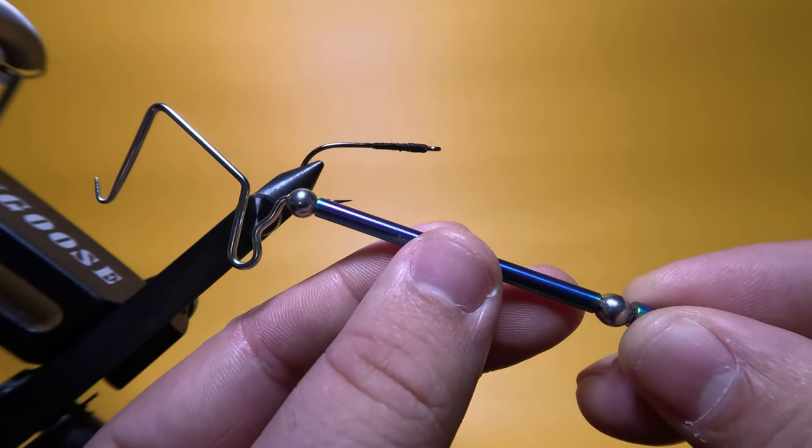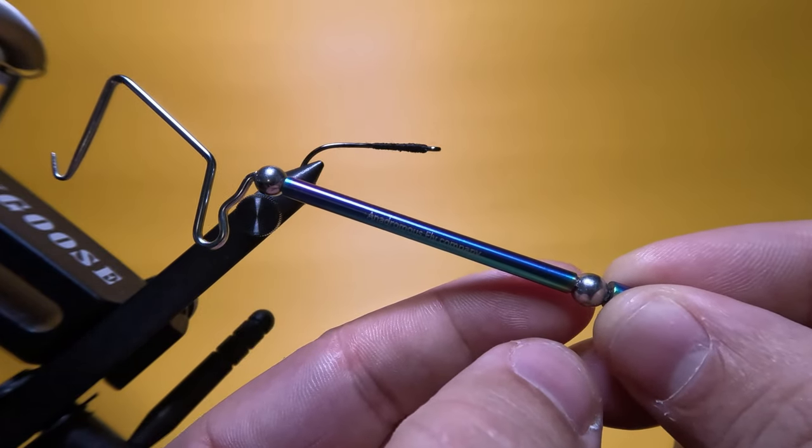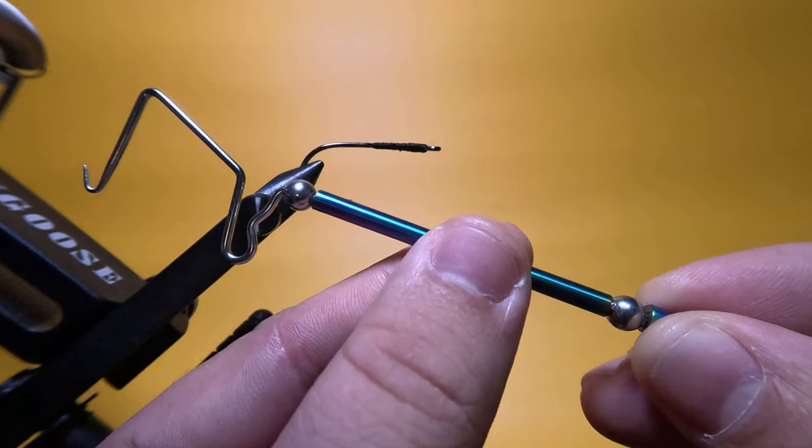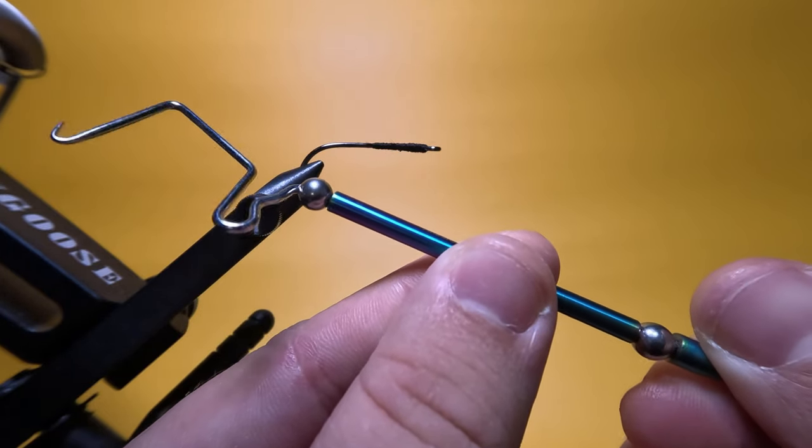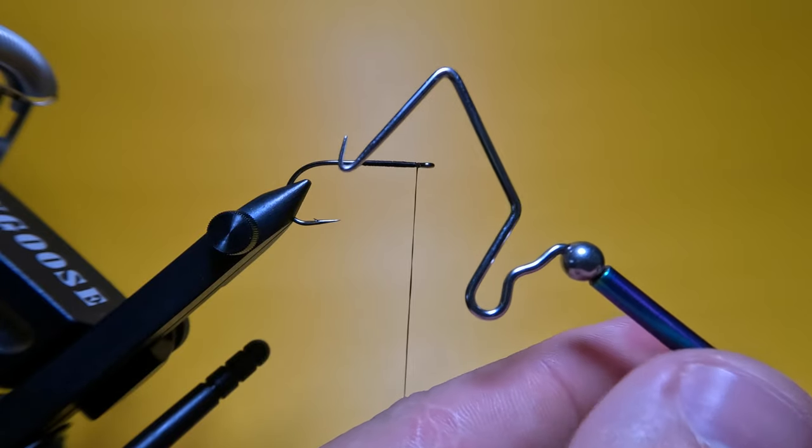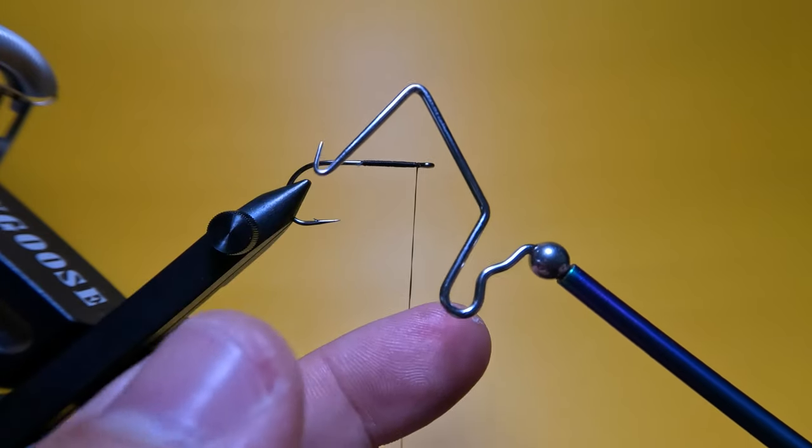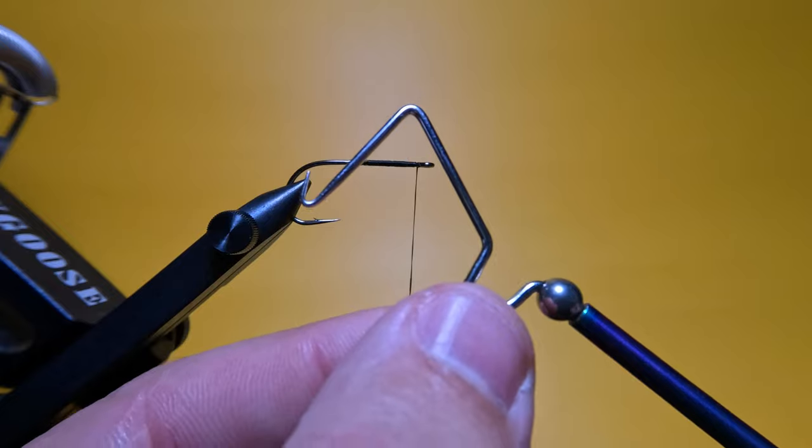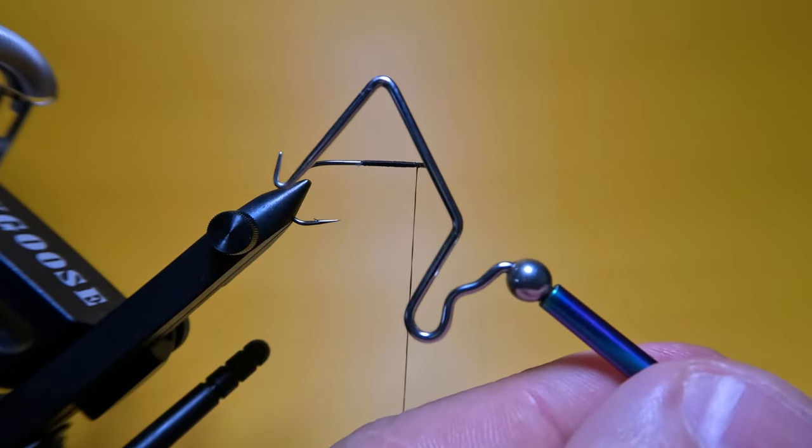The Monterelli Whip Finisher has a shaft encapsulated by two bearings and a sleeve which allows the tool to rotate freely. And above the shaft is an oddly shaped metal wire with a tapered hook at the top and a lower bend, both of which serve as anchor points for the thread while performing the whip finish technique.